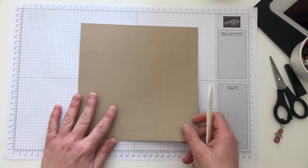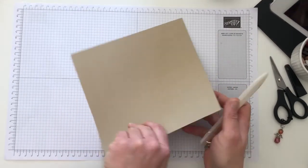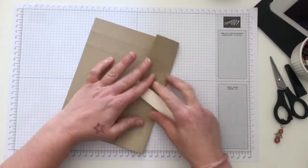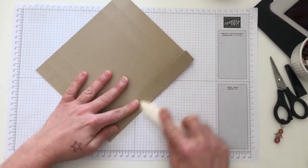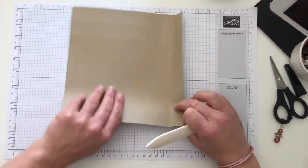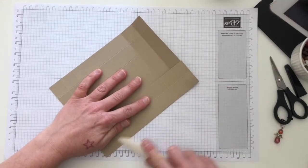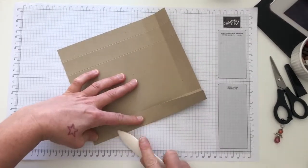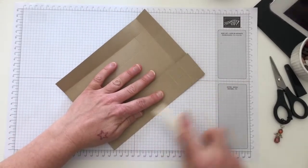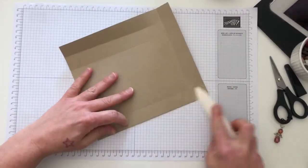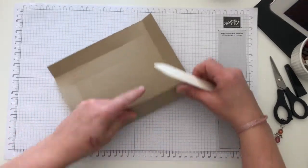Then I'm going to use my bone folder and just burnish all those score lines.